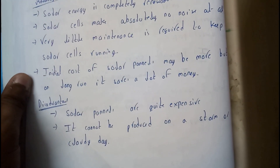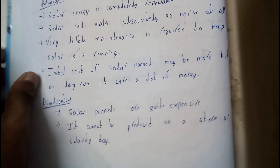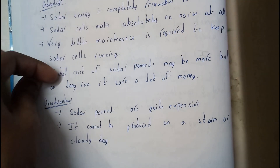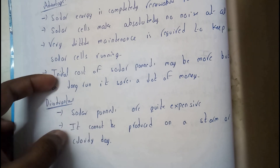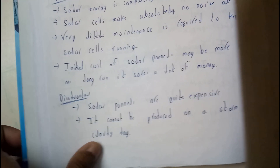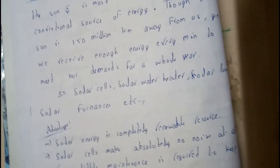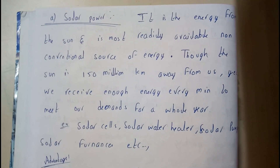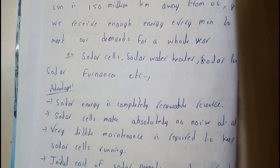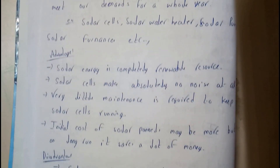Disadvantages of solar energy: solar panels are quite expensive — the initial cost is high. It cannot produce energy on a stormy or cloudy day. That covers solar energy.